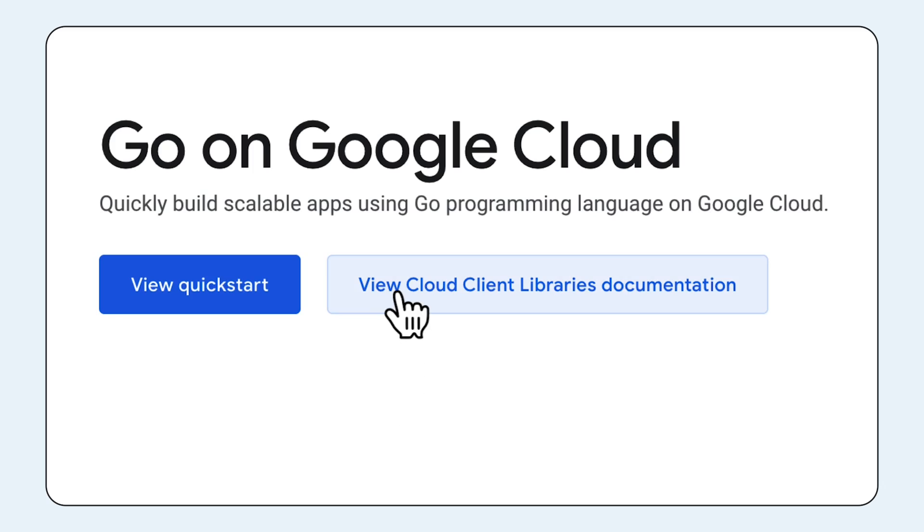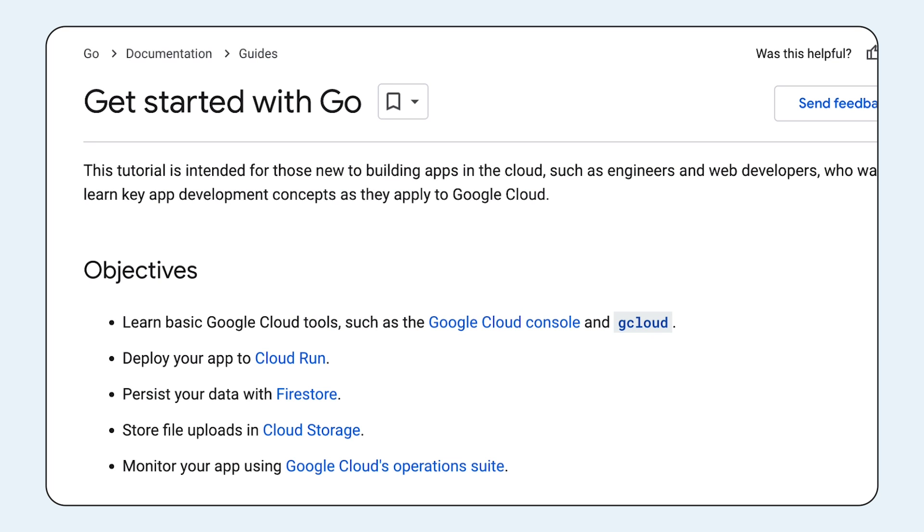Go also has millions of active developers. So whatever deployment pipelines, monitoring, and cloud providers you're already using, odds are they have support. And if you don't already have that stuff, you can use Go with Firebase or Google Cloud and be up and running in minutes.